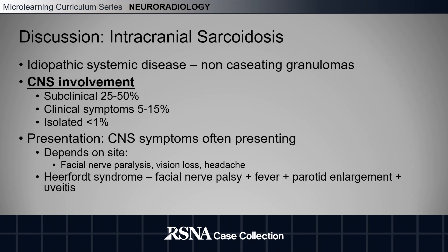Moving on to the discussion: sarcoidosis is an idiopathic systemic disease caused by the formation of non-caseating granulomas. The lungs and lymph nodes are most often affected. While less common, it is important to consider central nervous system involvement. Here we can see the prevalence of subclinical, symptomatic, and isolated CNS involvement.